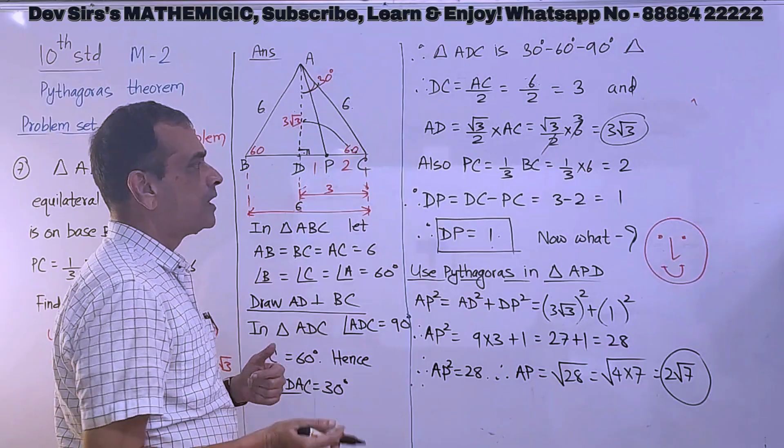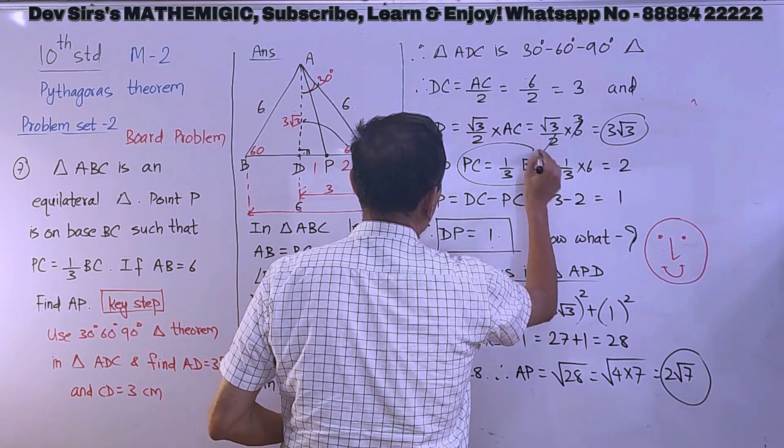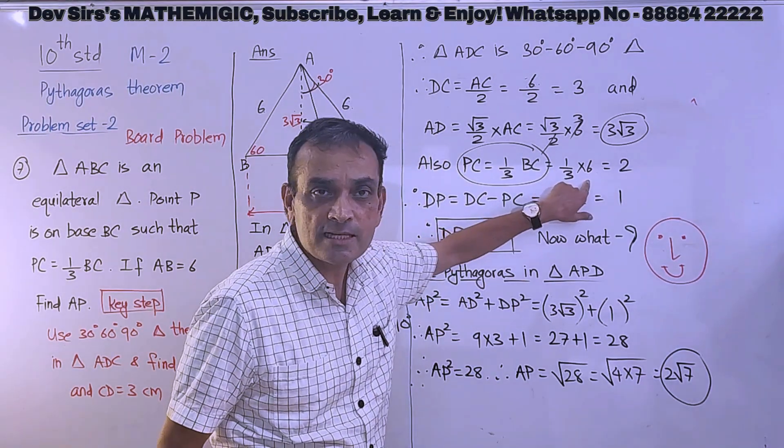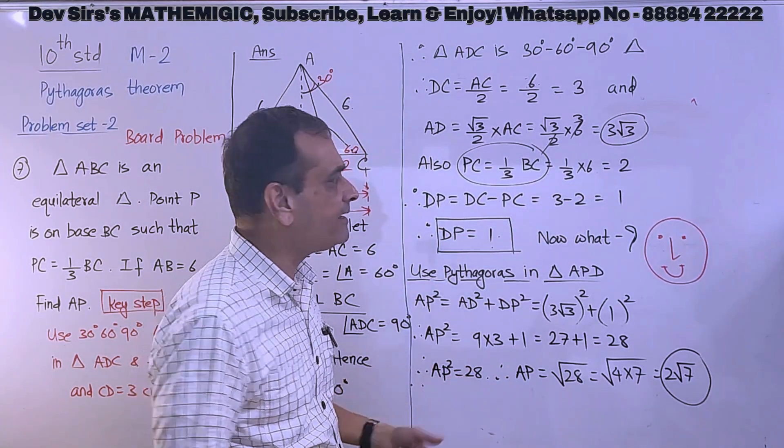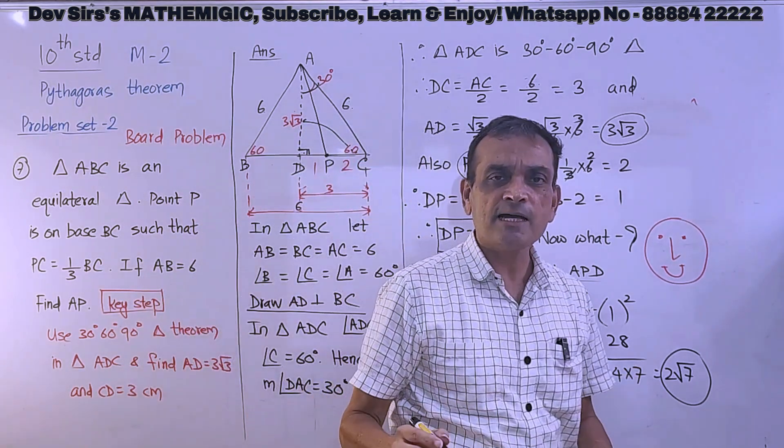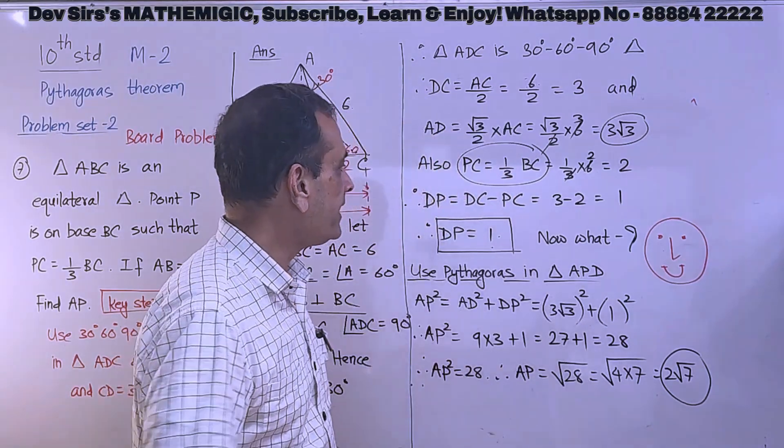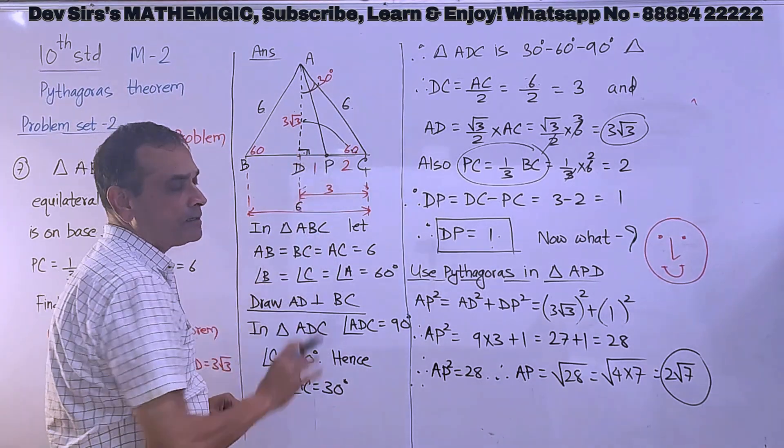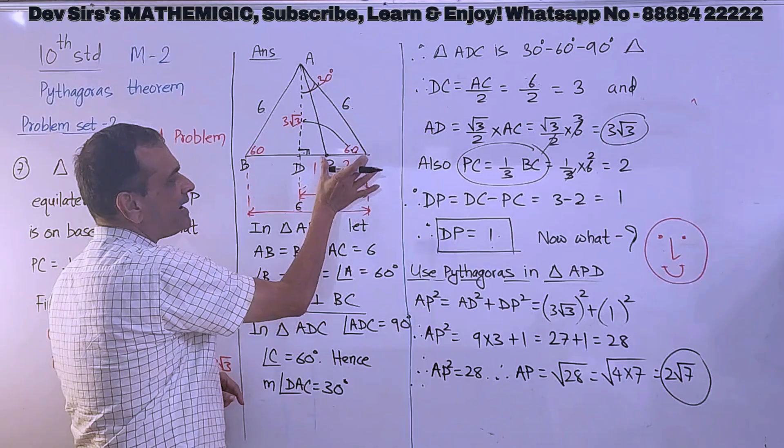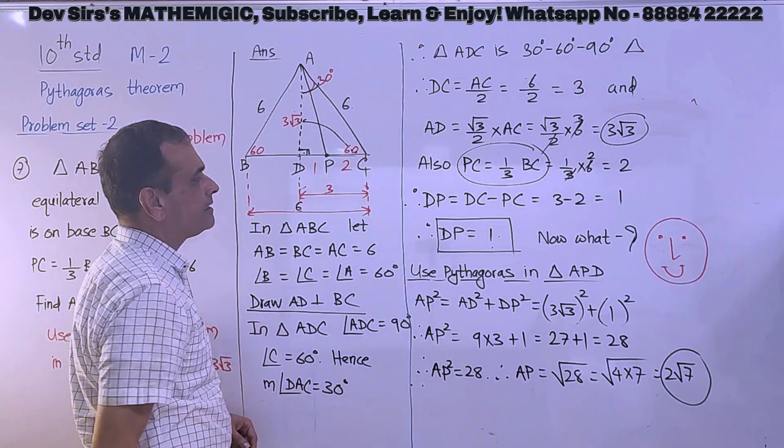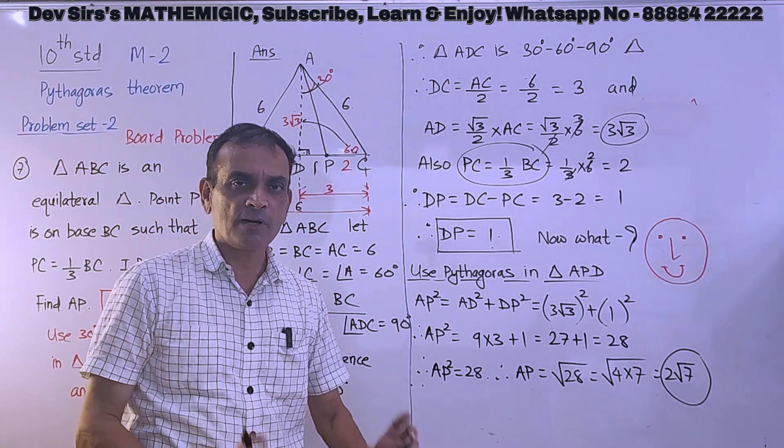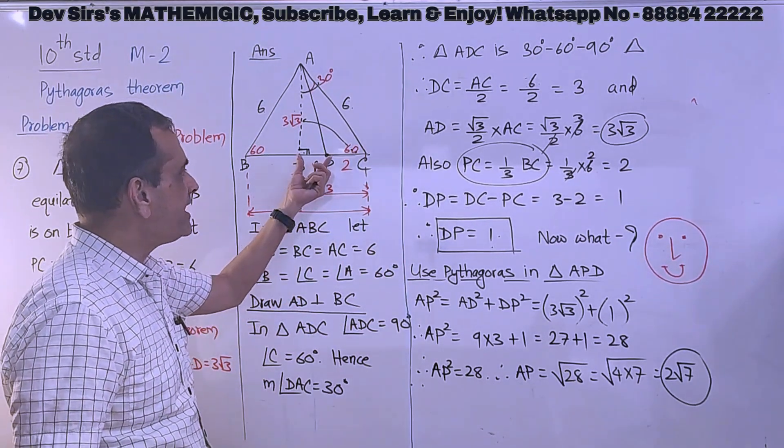Now what? One more thing is given - PC is equal to one third BC. BC is again 6, all three sides are 6 in an equilateral triangle. So 3 into 2 is 6, so PC is 2. One by one we are finding out the sides and showing in the diagram. PC is 2. Now this small thing is remaining - DP is equal to DC minus PC, that is 3 minus 2, which is 1. So finally, after 30-60-90 triangle theorem, we use segment addition and get DP as 1.